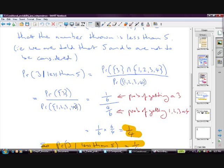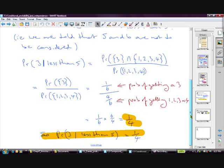You can actually see that from here couldn't you. There's only one of those and four of those. So the probability of getting a three given that the numbers thrown is less than five if we knew that is one over four.